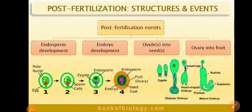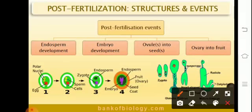Dear students, in this module we will be discussing post-fertilization structures and events from Chapter 2, that is Sexual Reproduction in Flowering Plants. The basic post-fertilization events include endosperm development, the development of the embryo, and the development of ovule into seeds and ovary into fruit.